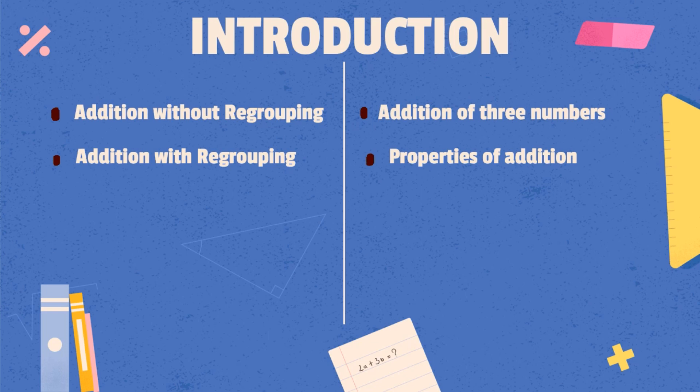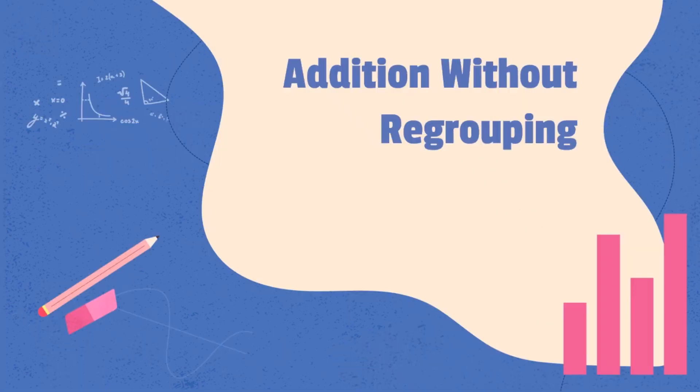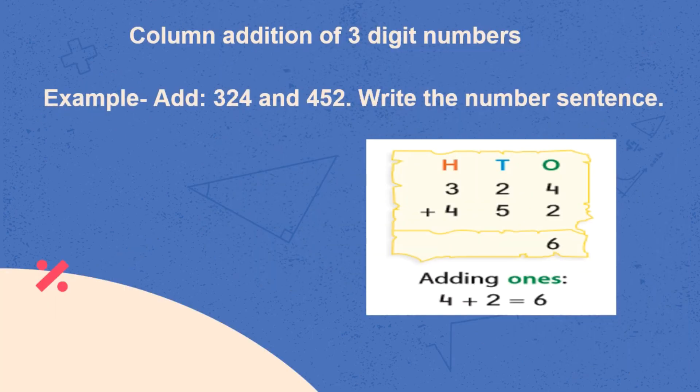So, let us start with Addition without regrouping. In the given example, as you can see, 2 numbers 324 and 452 are added. We will start adding from right hand side. At 1's place, adding 4 to 2, we get 6.